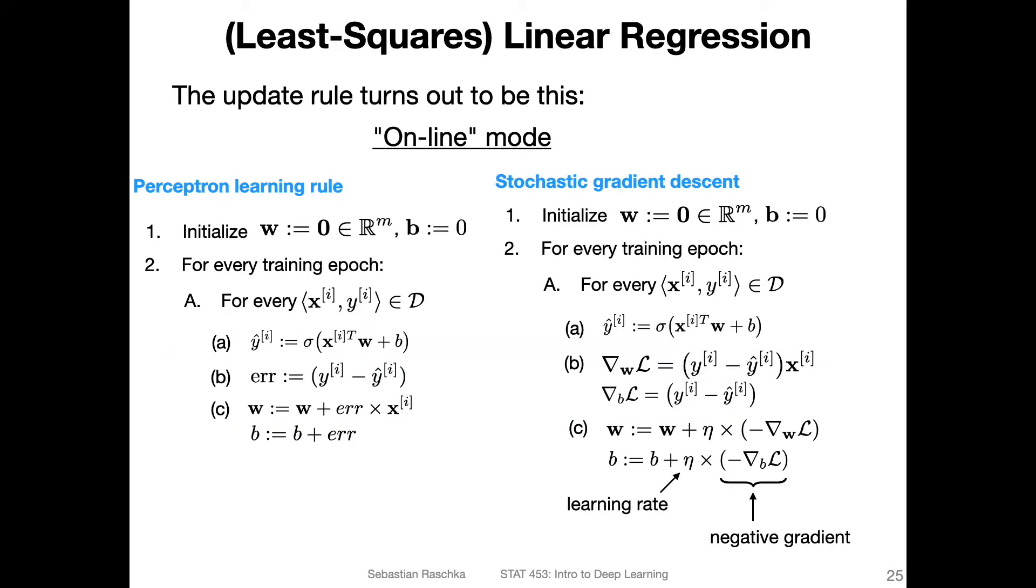It turns out that this is actually the online mode that we talked about, just written a little bit differently. On the left hand side, we have again the online mode for the perceptron learning rule. Where we iterate over the training epochs, and then for every training example, we compute the prediction, compute the error, and then do the update here.